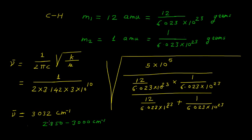It means that we can approximate the vibrational frequency of any bond. And you can see that this value, 3032, is a little bit close to this range. So in this way we can apply this formula for calculation of vibration frequency.